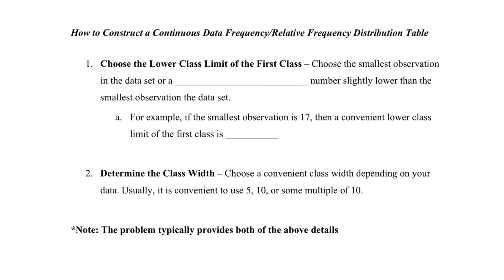To construct a continuous data frequency and relative frequency distribution table, note that the problem typically provides the necessary details to minimize stress. The first step is to choose the lower class limit of the first class — ideally the smallest observation or a convenient number slightly below it. For example, if the smallest observation is 17, choose 15 as the lower class limit so classes run 15, 25, 35, etc. Then determine a convenient class width such as 5, 10, or a multiple of 10, based on how many classes you want to create.